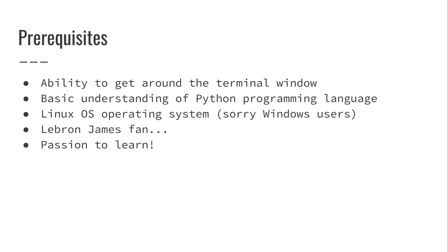By the end of this course, you will be ready to win your NBA fantasy league by building the best fantasy projection model using Python, and more specifically Pandas. All of this will be done using a Jupyter notebook so you can share your work and improve on it over the years. There aren't many prerequisites. While we'll be spending some time in the terminal to download and install our packages, you may only need a basic understanding of how to get around the terminal window. We will also be doing everything in Python, so you should have a basic understanding of the language, but we will spend an entire section to make sure we are on the same page.